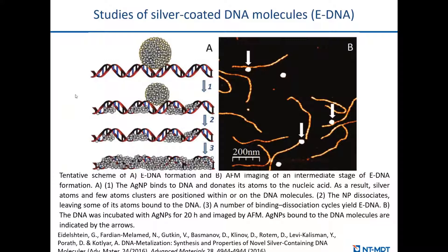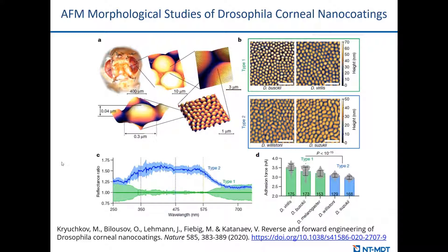AFM morphological studies helped verify the process of synthesis and discover the properties of novel silver-coated DNA molecules, which can be used as one-dimensional conductors. AFM was also used in an interesting study of the drosophila eye. Insect eyes have an anti-reflective coating owing to nanostructures on the corneal surface that create a gradient of refractive index. AFM was used to study the morphological structure of the drosophila eye coating to perform reverse engineering and use this knowledge to design novel reflective coatings.